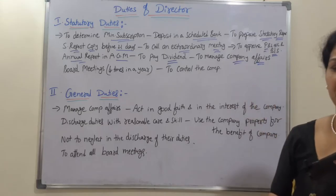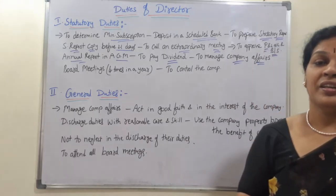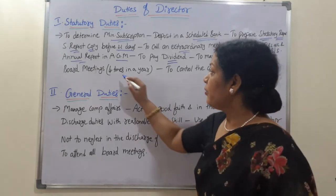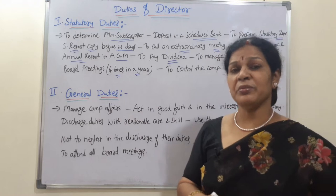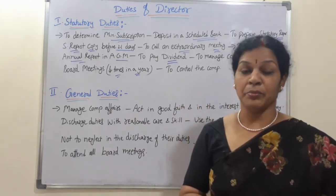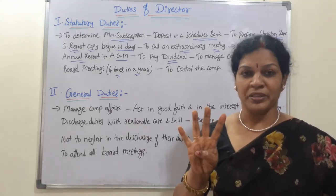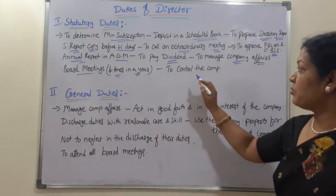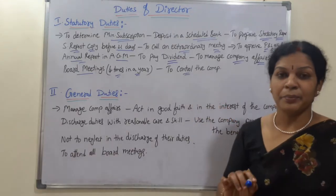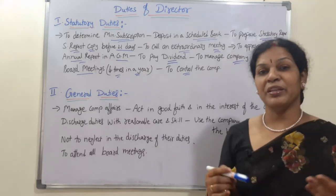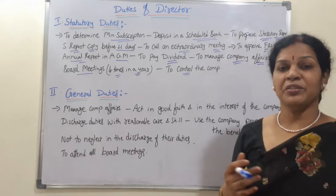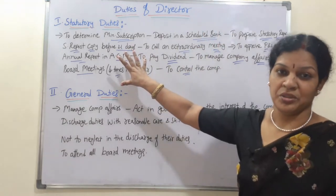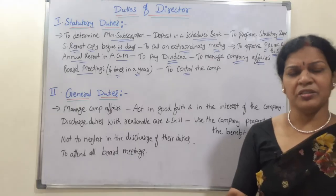The eighth statutory duty is to manage all company affairs and transactions. The ninth is to conduct board meetings — these must be held four times a year, meaning one every three months. The director must ensure all four meetings are properly conducted. The tenth statutory duty is to control the entire company — if any mistransparency or irregularity arises, the director must address and control it.